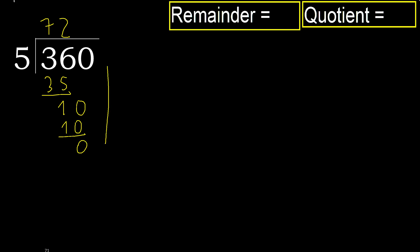Next — there is no number, therefore finish it. 360 divided by 5 is here.